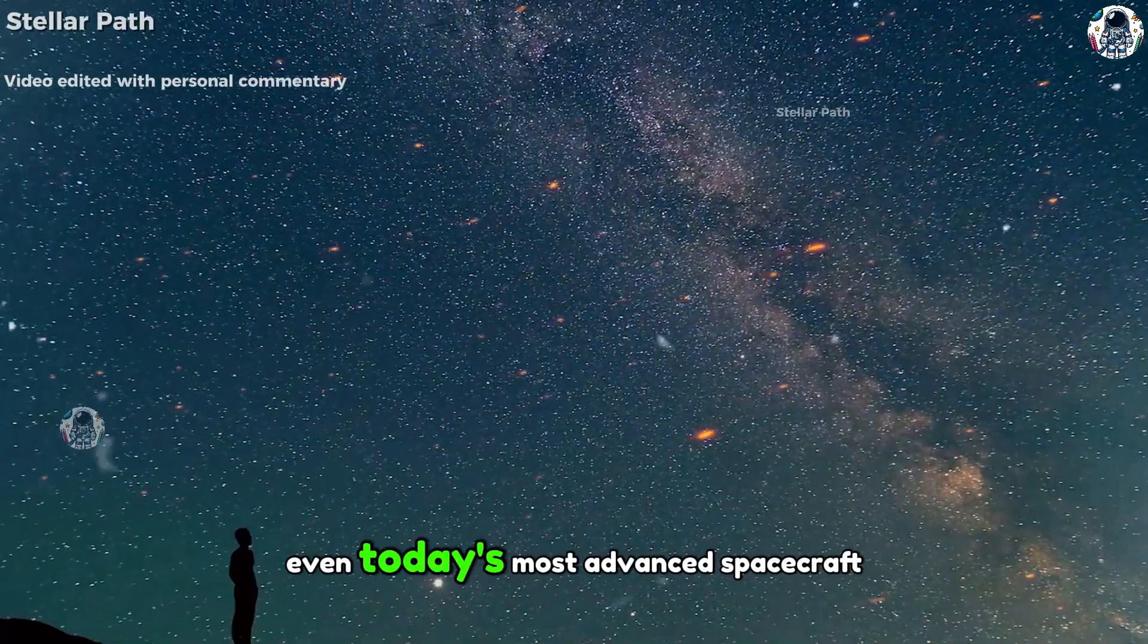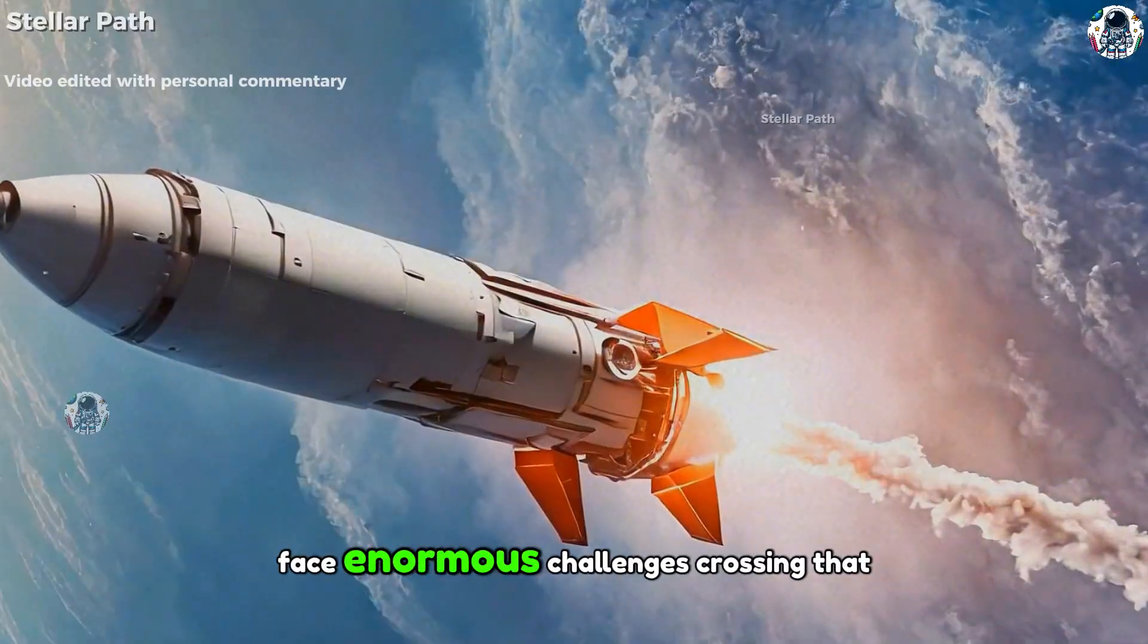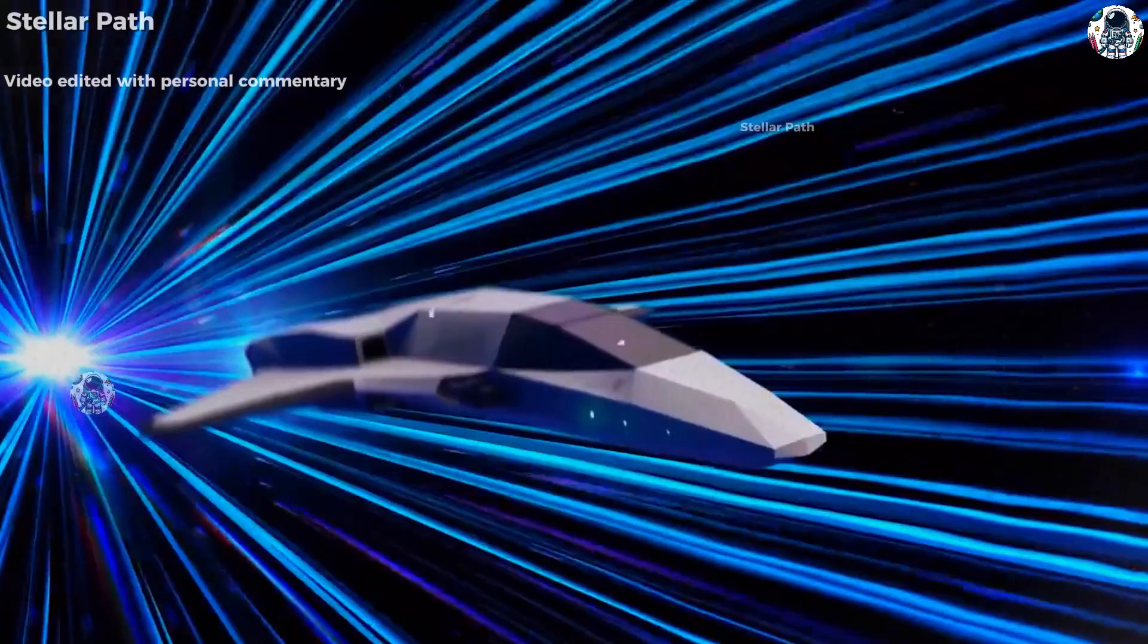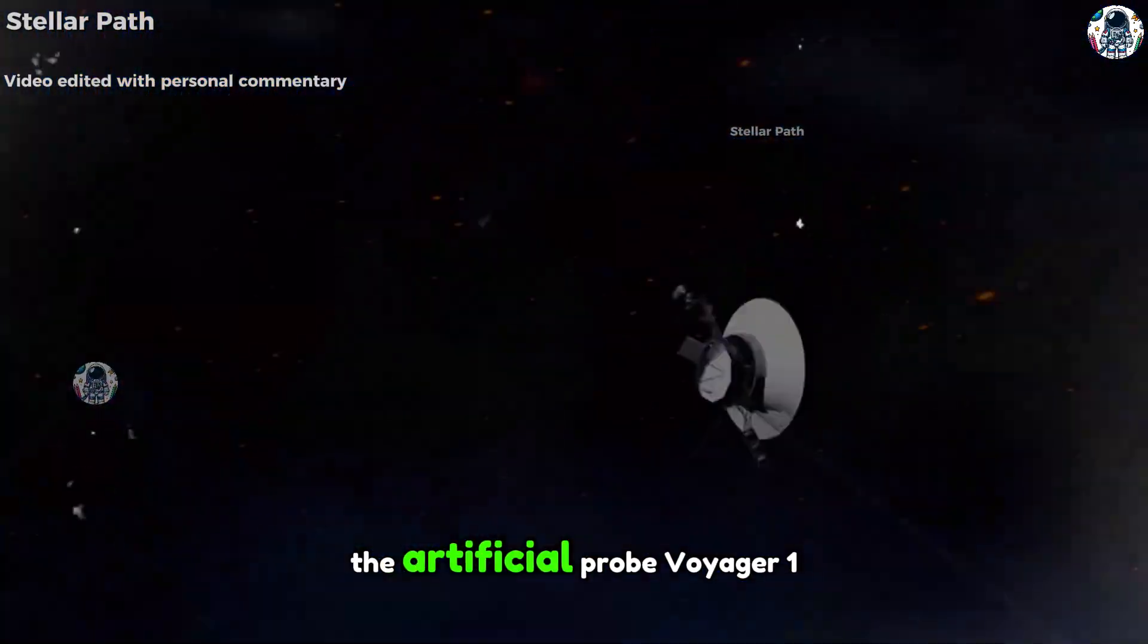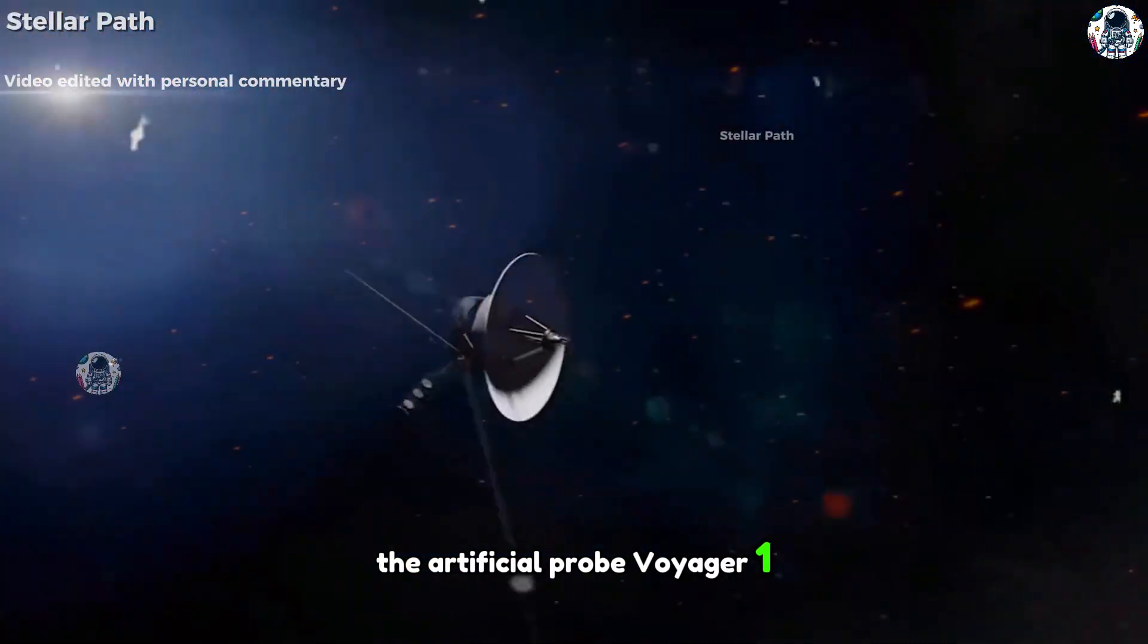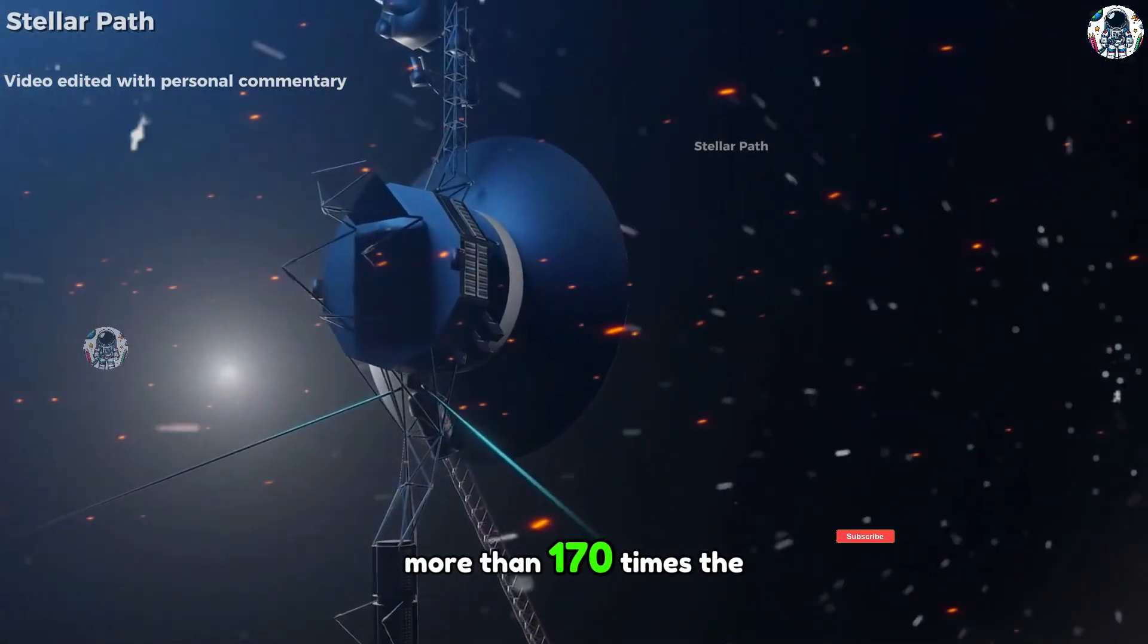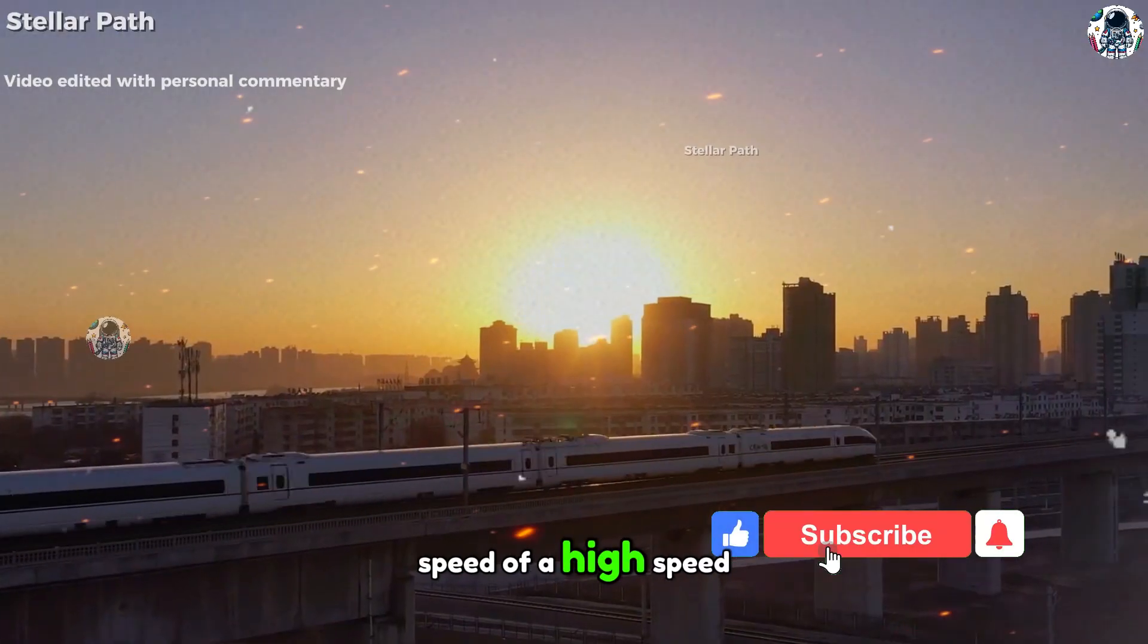Even today's most advanced spacecraft face enormous challenges crossing that distance. For example, the artificial probe Voyager 1 travels at 60,200 kilometers per hour, more than 170 times the speed of a high-speed train.